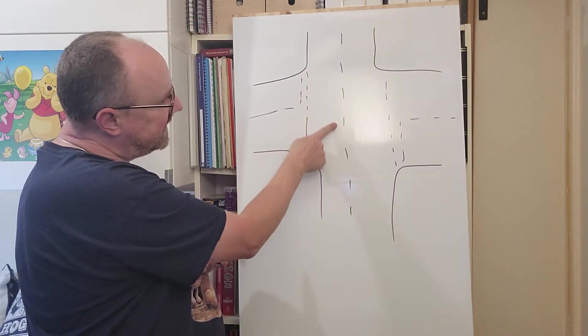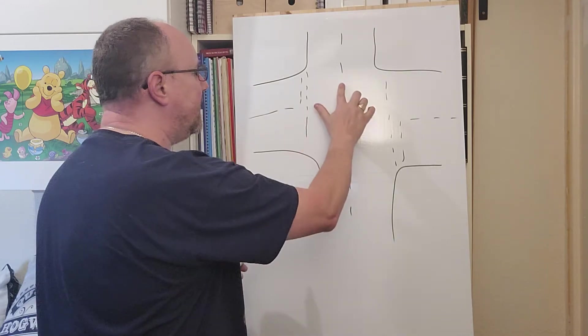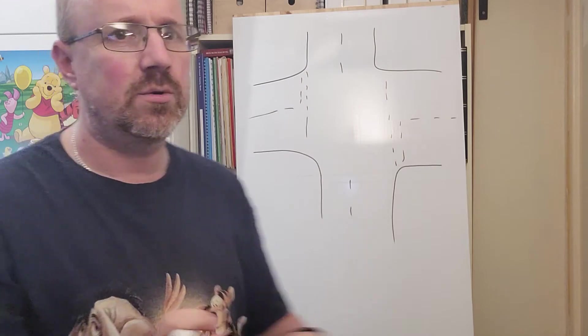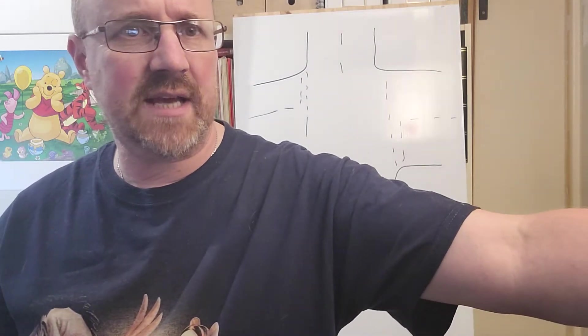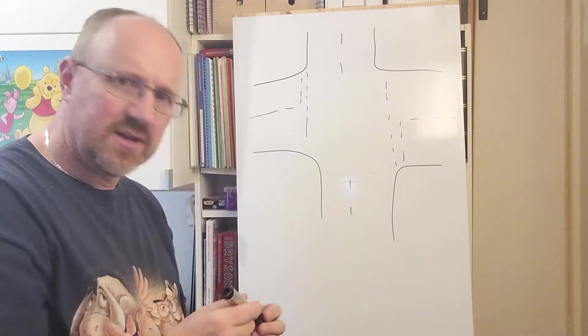I'm just going to rub out the center lines in the middle of the junction just to make things a little bit clearer. And I'm just aware that this light is casting a bit of an unwanted glare on there. That's better, I think we can see that better.